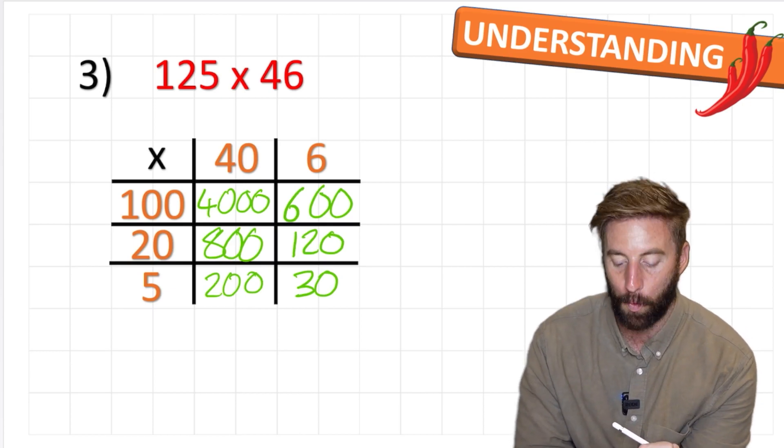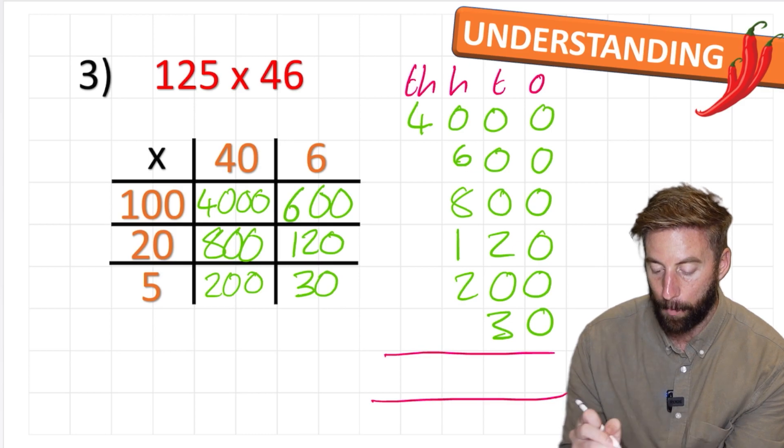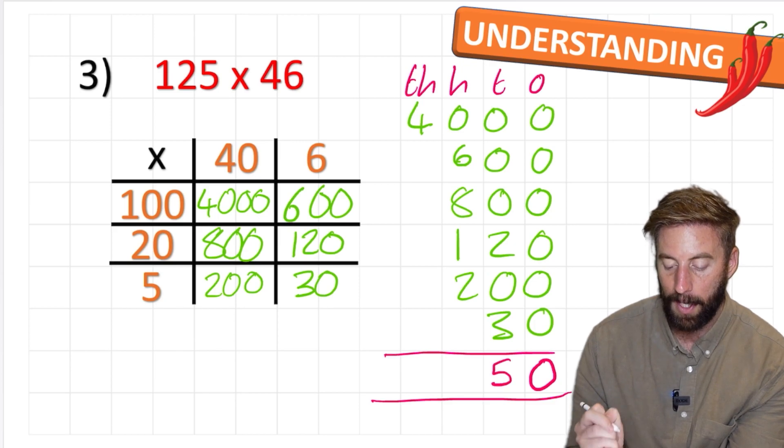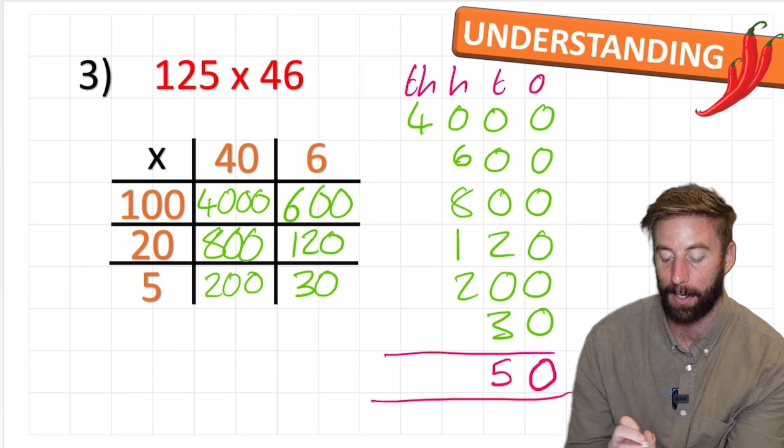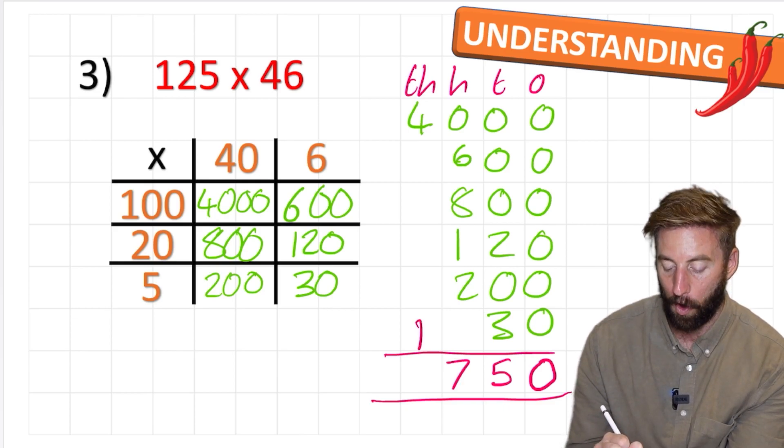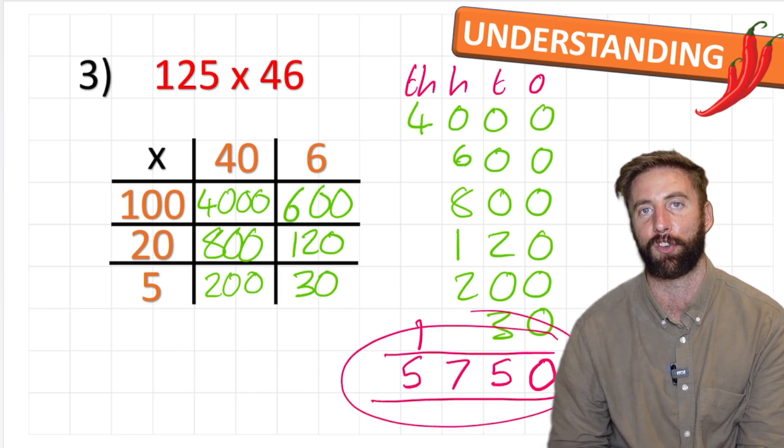Now I have a longer one to add up. Again it's not that much harder, it's just a bit longer. So here we go. In my ones column I have all zeros, so my answer is going to be 0. In my tens I have 2 and 3 which is 5. In my hundreds I have 6 and 8 which is 14, plus the 1 is 15, plus the 2 is 17. And in my thousands I have the 4 and the new 1: 5. So my answer to 125 times 46 is 5,750.